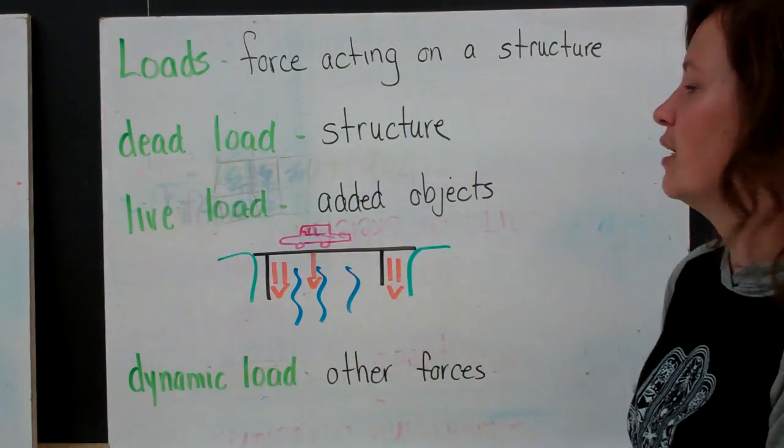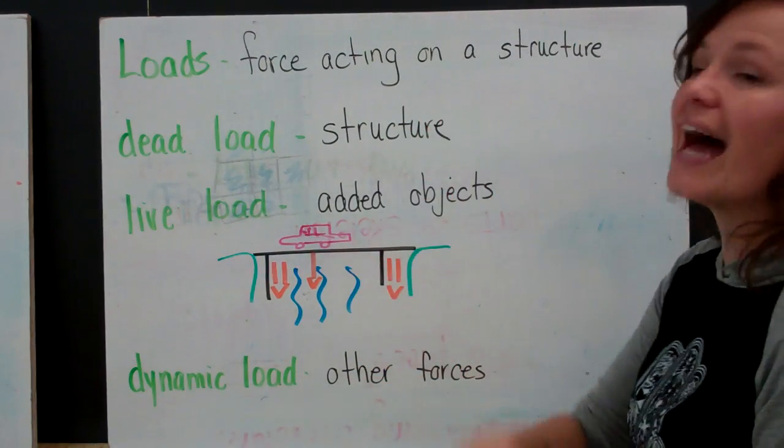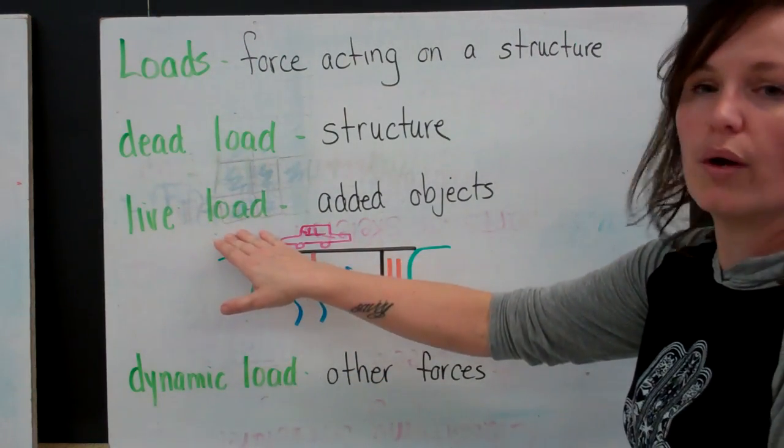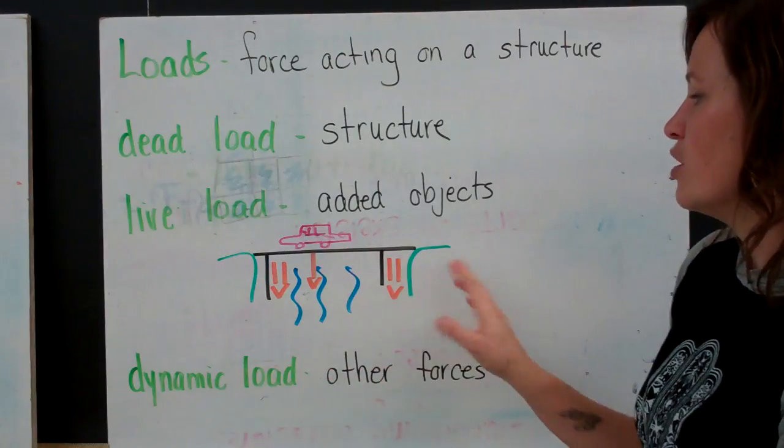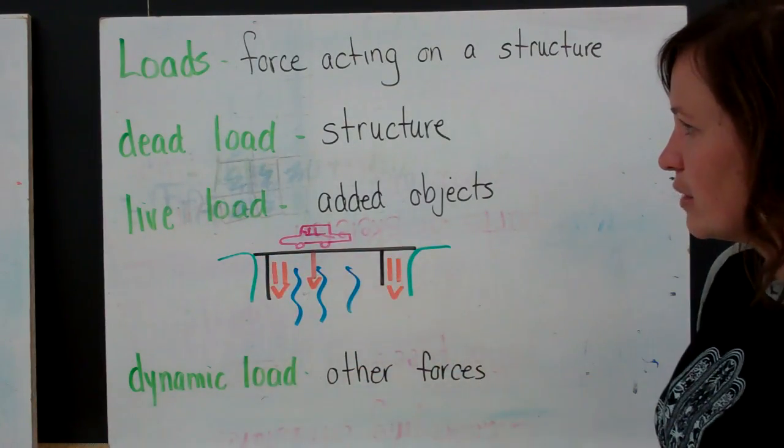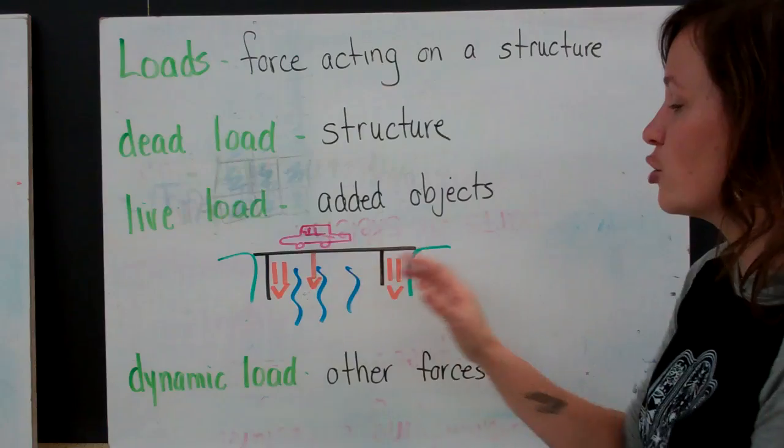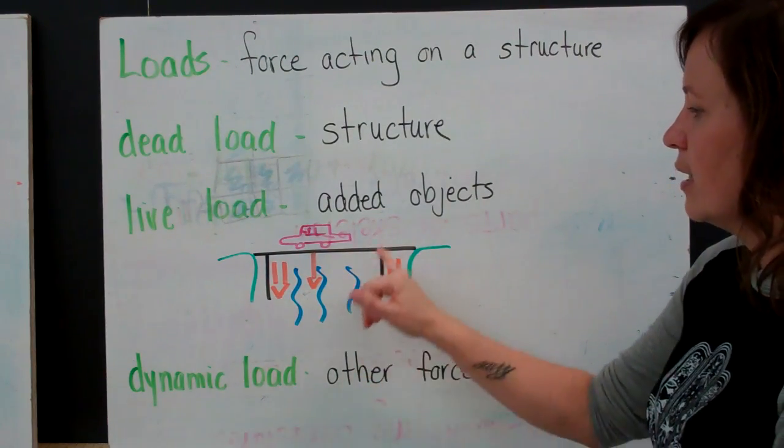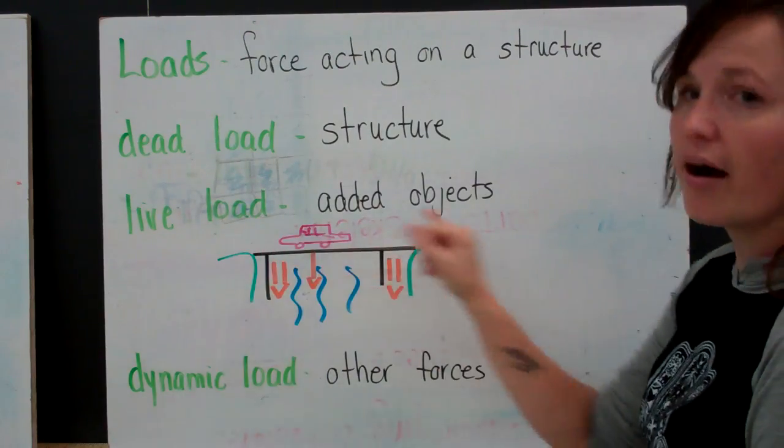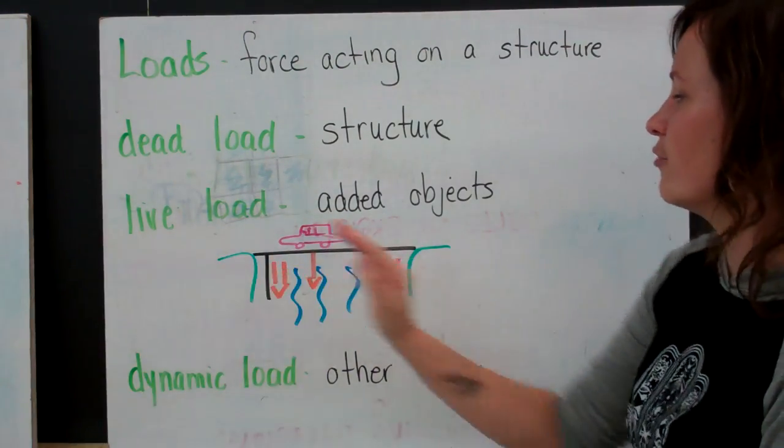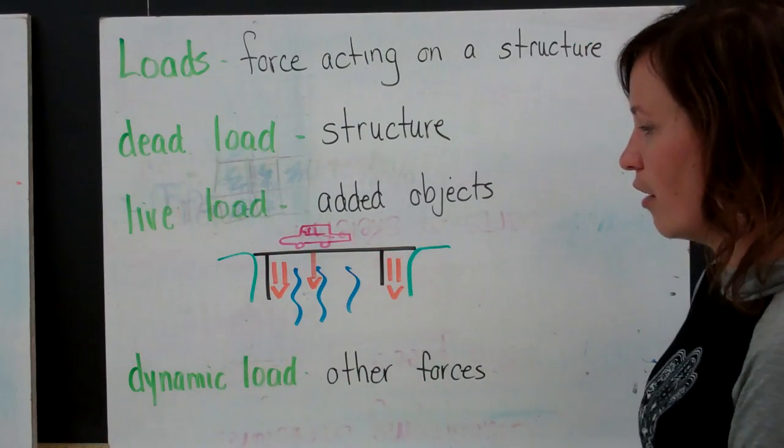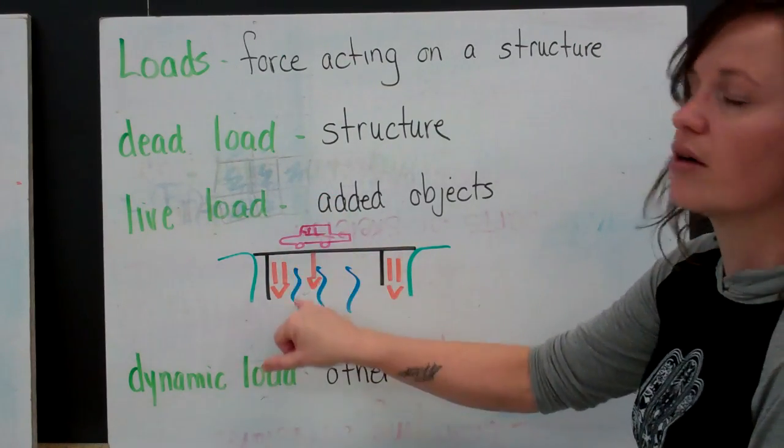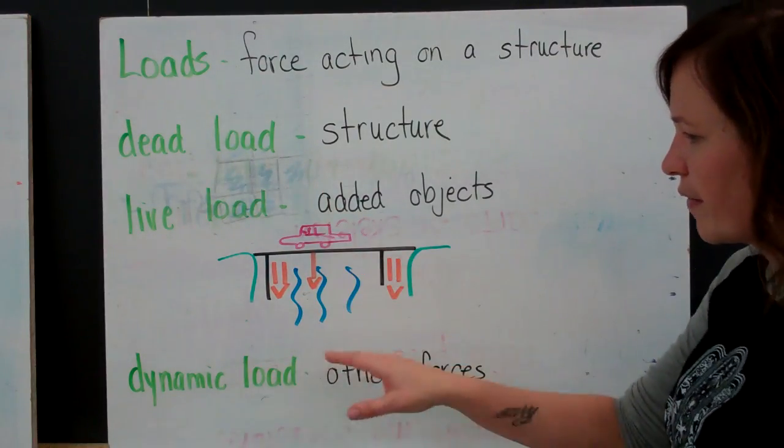And then there's a live load. These are the objects that are added to a structure. And when a structure is being constructed, it has to consider how it's going to manage those masses. So if we think of a bridge, so we have our bridge here. It has its dead load, which is the actual mass of the bridge, and the gravitational force that's acting upon it. But then you're going to have cars that are a live load that are added objects to the mass of the bridge. And then we have the force on that car, so the gravity force on that car, going in this direction.